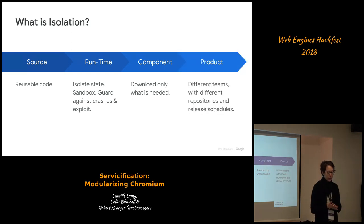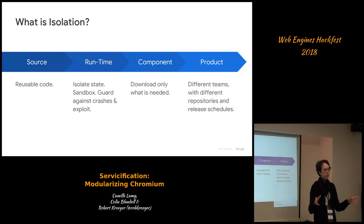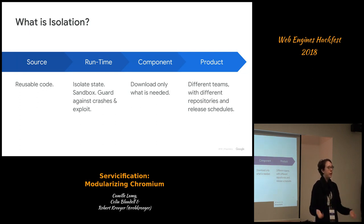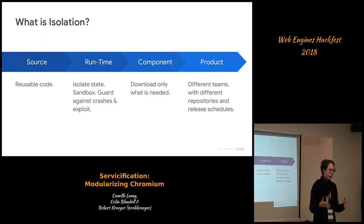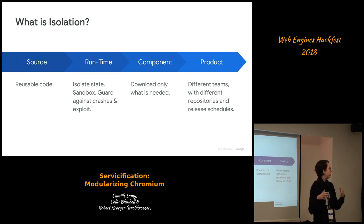And finally, we can define product isolation, where different teams working on different products based on the same source code have different repositories and release schedules. That's really how you become a computing platform and not just a web browser. For us, the particular issue is having both Chrome OS and Chrome share the same source code repository and release schedule.